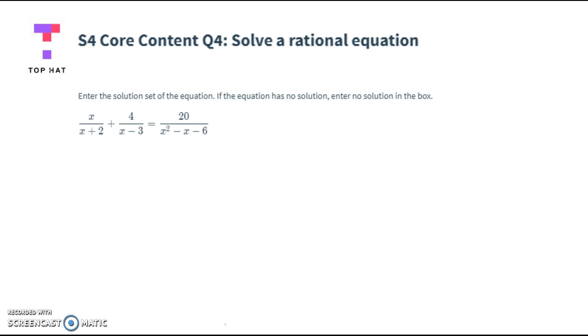So this was number 4 in those embedded questions, and it's x divided by x plus 2 plus 4 divided by x minus 3 equals 20 divided by x squared minus x minus 6.